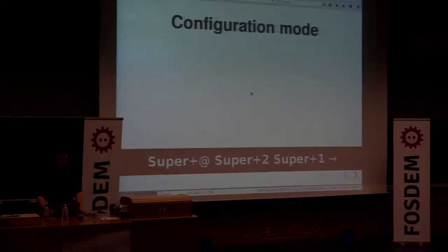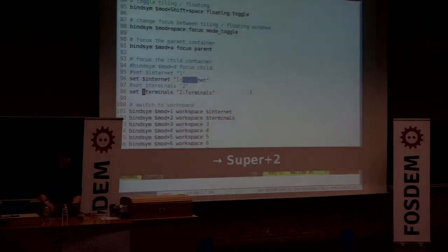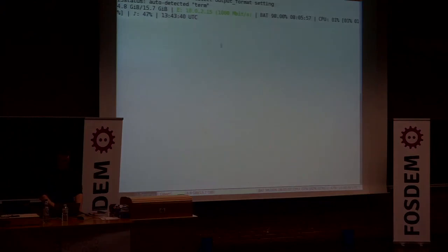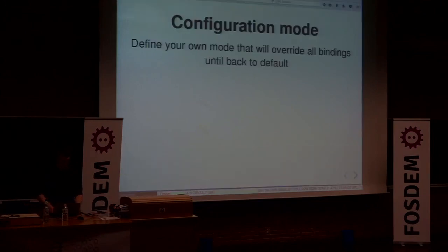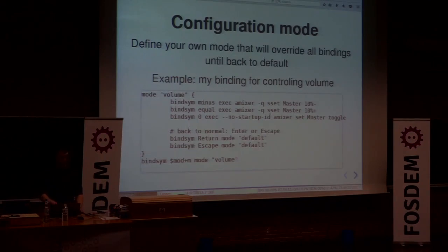Another interesting feature is configuration modes. I've already shown you the resize mode — it triggers a new binding set for you to define. I've used this for controlling the volume. The volume is displayed in i3status on the bottom right. I've configured a mode where zero mutes and unmutes, and two keys control the volume level. That's one of the nice features of i3: the configuration file contains all the default bindings you can modify, and you can do advanced configuration very easily.